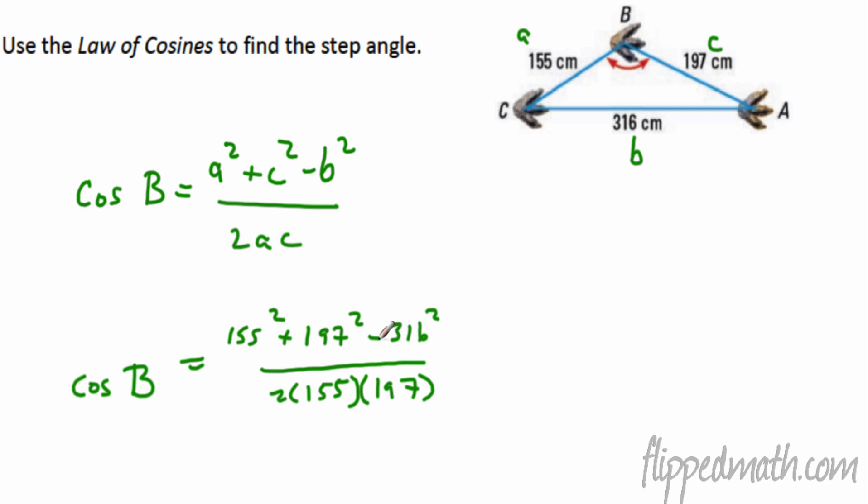Alright, I think we figured that all out here nicely. And we get to cosine of b is equal to 155 squared plus 197 squared minus b squared, so b is 316, all over 2 times 155 times 197. What does all of that equal? Well, that all equals, if you figure it all out, negative 0.6062.